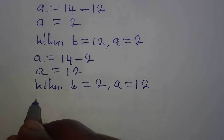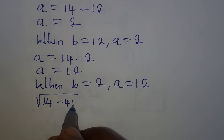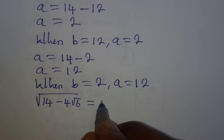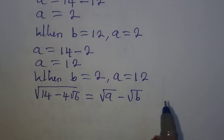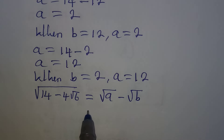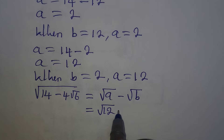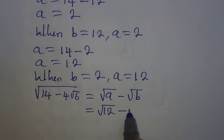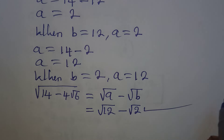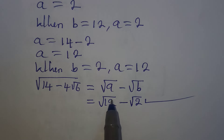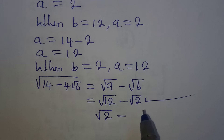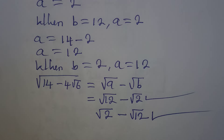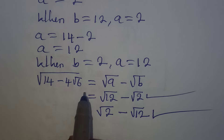Getting back to the problem: the square root of 14 minus 4√6 equals square root of a minus square root of b. Working with the values when b is 2 and a is 12, one answer is √12 minus √2. The other possible value, using a equals 2 and b equals 12, is √2 minus √12. So these are the two possible values of the square root of 14 minus 4√6. Thank you for watching, and share this with your friends.